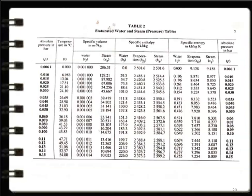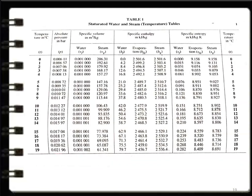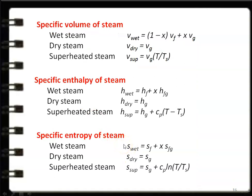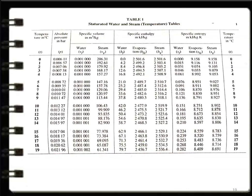For dry saturated or wet steam, refer to Table 2 (pressure-based) or Table 1 (temperature-based). For superheated steam, refer to Table 3 (specific volume), Table 4 (specific enthalpy), and Table 5 (specific entropy). Using these tables and the equations, you can calculate steam properties with simple arithmetic. One important point: sometimes you need to interpolate — for example if given 15.5°C, use linear interpolation between the tabulated values.